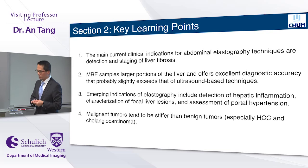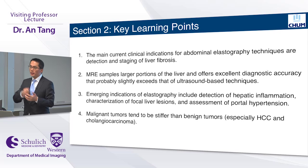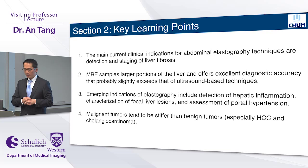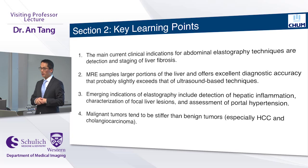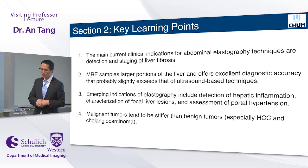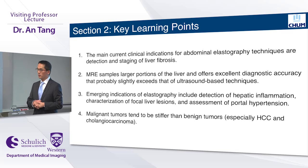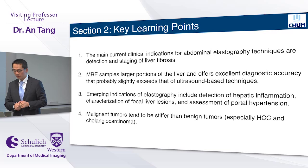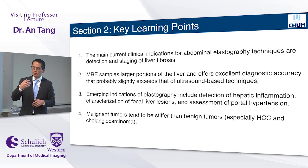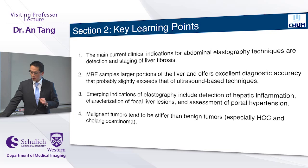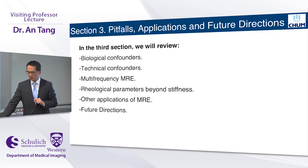Take-home messages for the second section: the main current clinical indication is assessment of liver fibrosis. Advantages of MRE include sampling a larger portion of the liver than ultrasound elastography and excellent diagnostic accuracy. Emerging indications include detection of inflammation, characterization of focal lesions, and assessment of portal hypertension. As a rule of thumb, malignant tumors tend to be stiffer than benign tumors, especially HCC and cholangiocarcinoma.